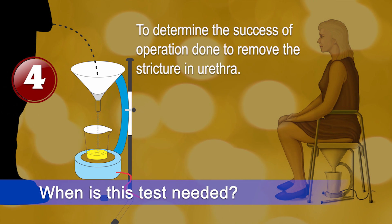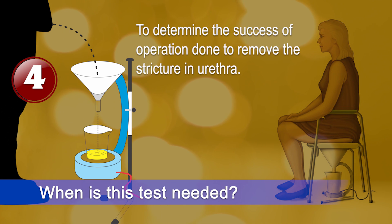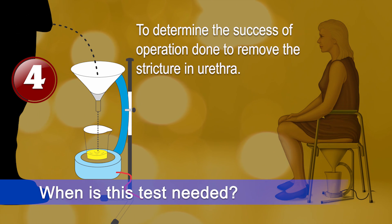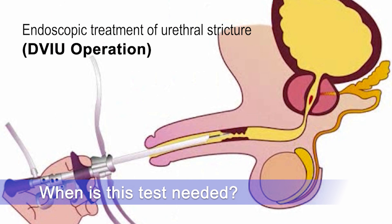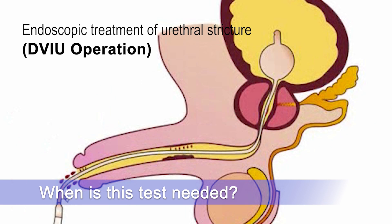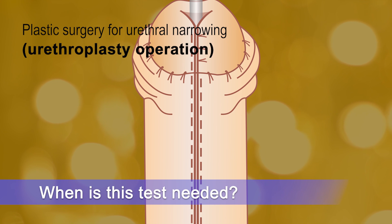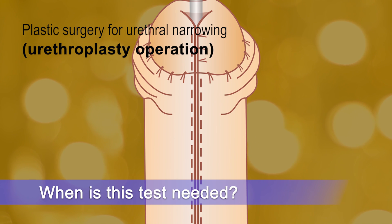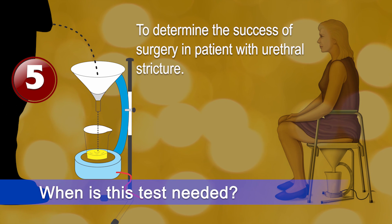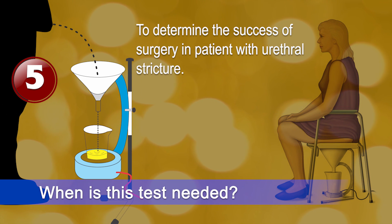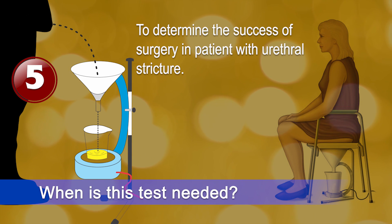The fourth clinical situation is whenever a patient undergoes an operation on their urethral passage to treat stricture — for example, endoscopic surgery known as DVIU, or a plastic surgery on the urinary passage known as urethroplasty — we do this test to ascertain the outcome of surgery. The fifth situation is females who undergo operation to treat their stricture; in them also, to see the improvement the patient is experiencing, we create documentary evidence of their urinary flow.